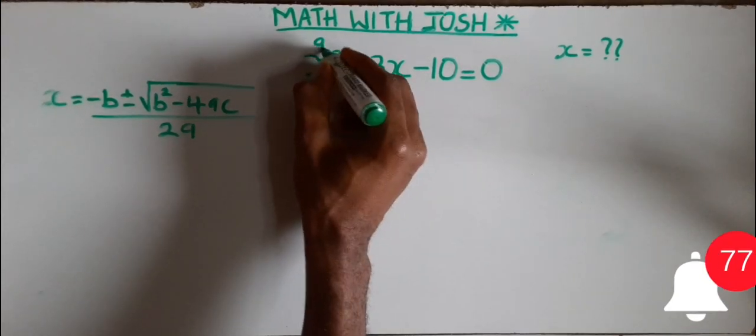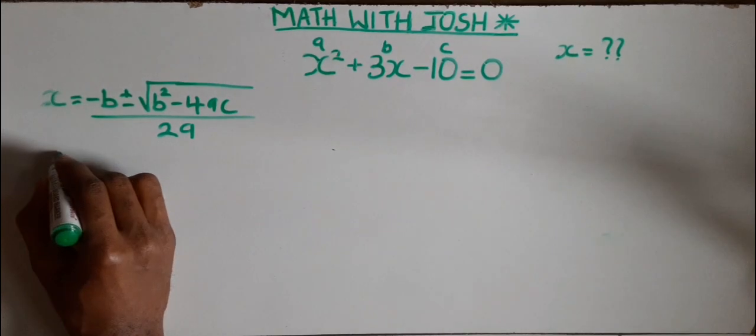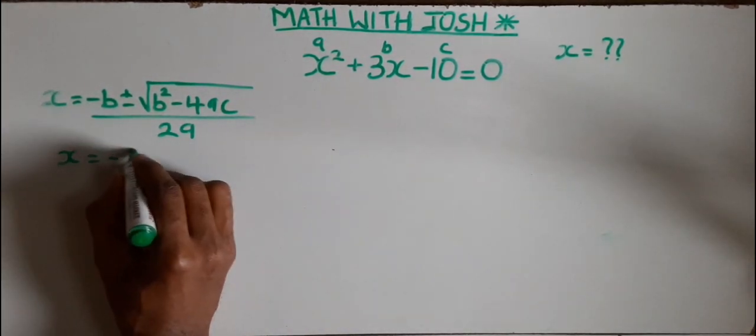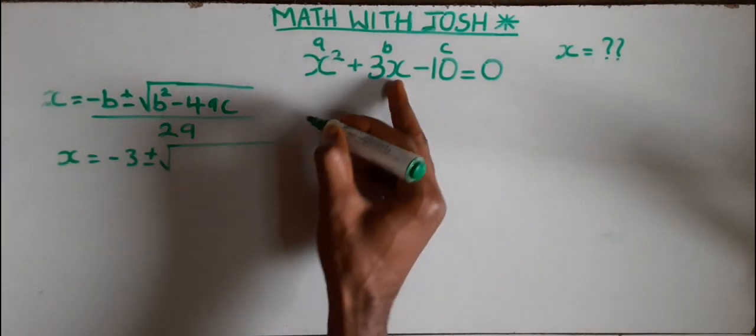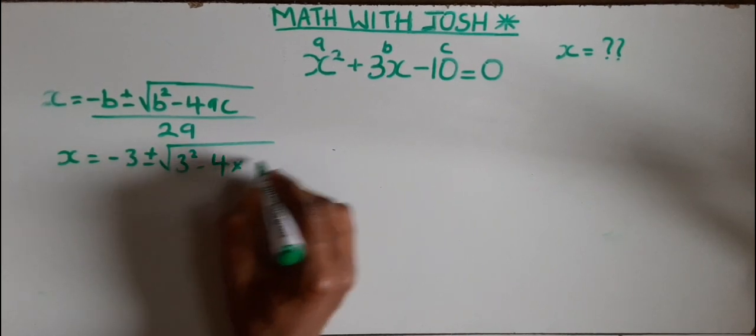Those letters in the formula are the coefficients of x squared, that of x, and the constant. The coefficient of x squared is the a, the coefficient of x is the b, and the constant is c.